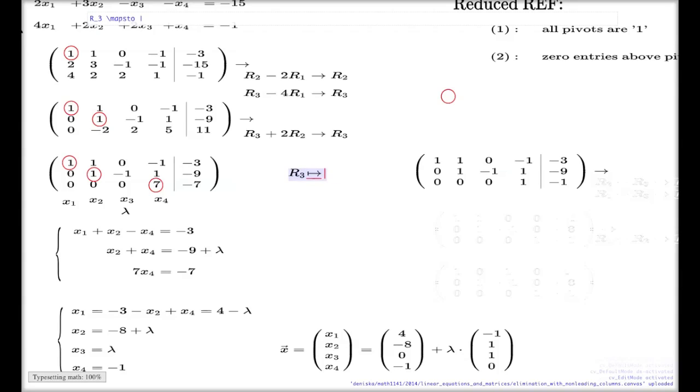R3 went into one-seventh of R3. This is the elementary row operation we performed here, which converted this matrix into this matrix.